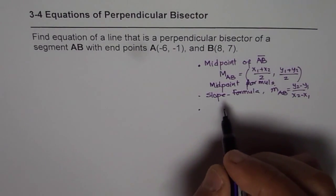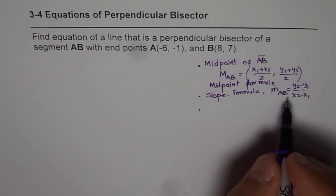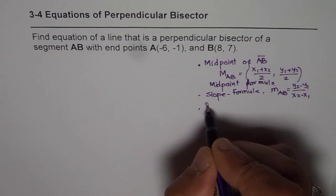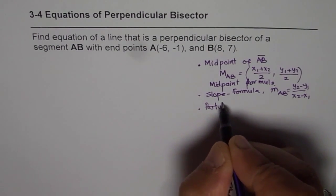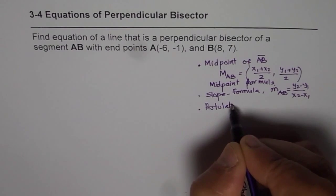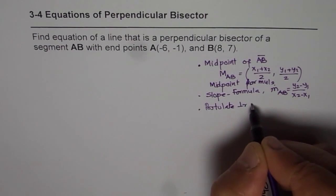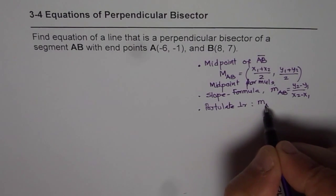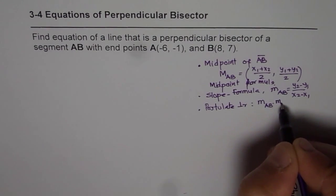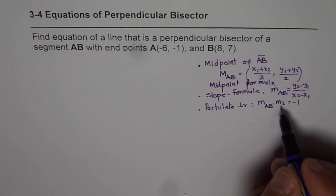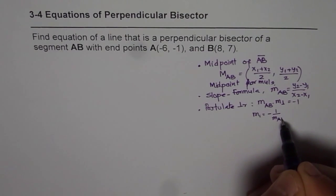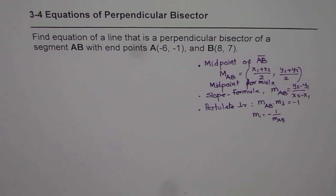The next step should be, find slope of perpendicular line. You can use the perpendicular postulate. We can use the postulate for perpendicular line. So product of that slope AB and the perpendicular line should be -1, or we can say M⊥ equals to -1/M_AB. You can rearrange and write it.